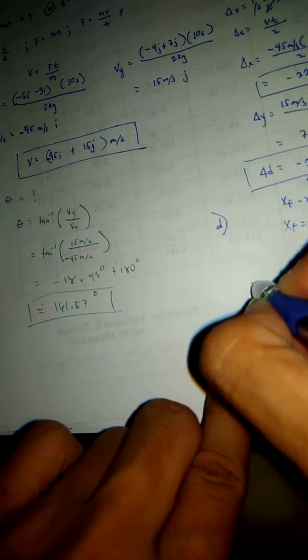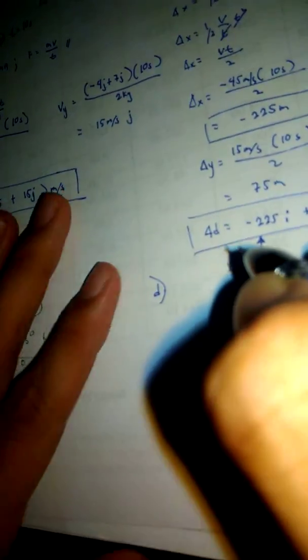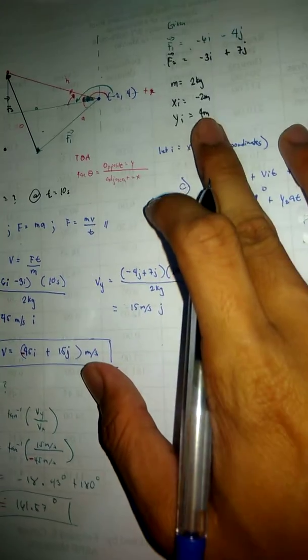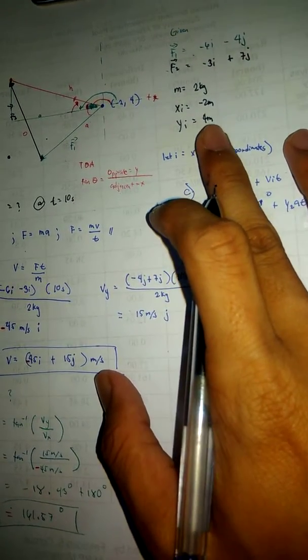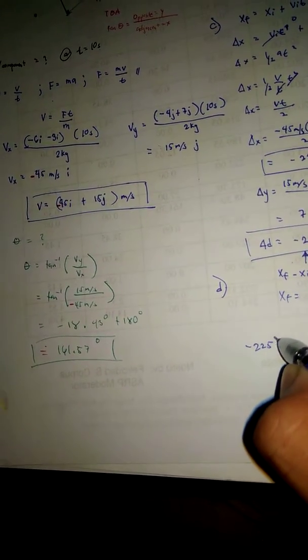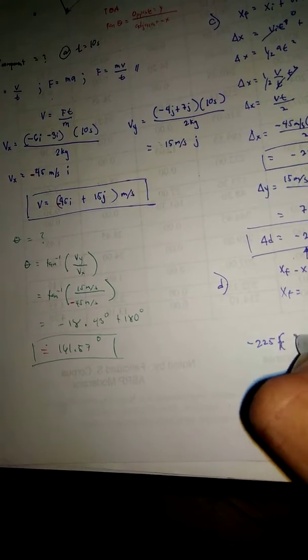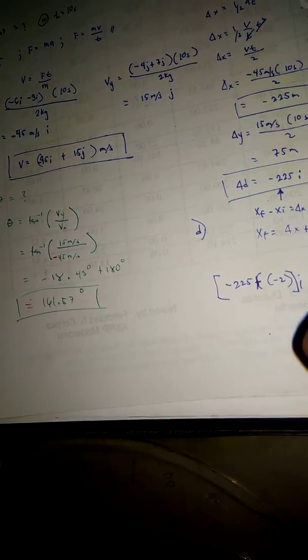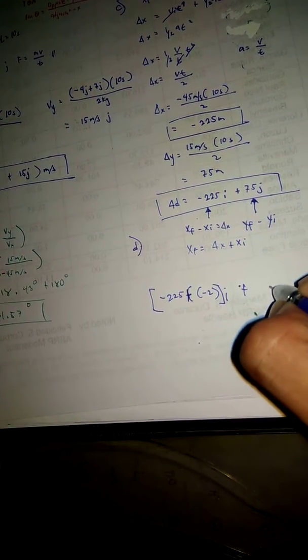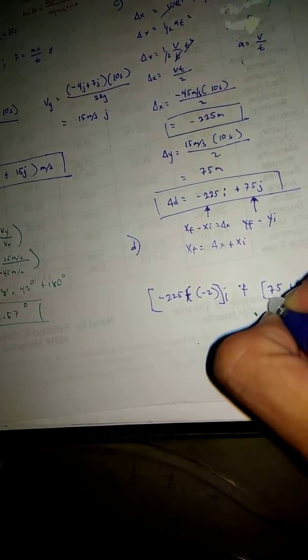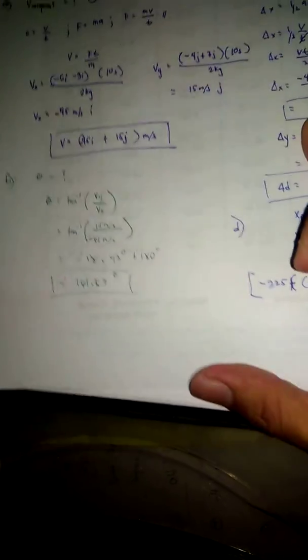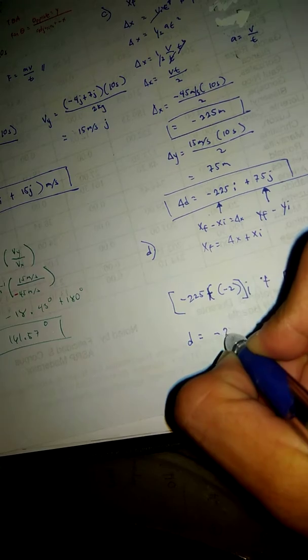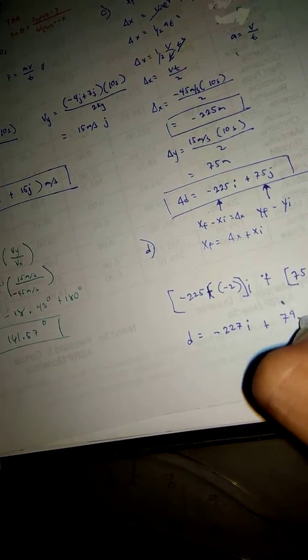The final, negative 225 is our delta X and the initial position at the X axis is negative 2 and the initial position at the Y coordinates is 4. So here, negative 225 plus negative 2. This is i plus 75 plus 4, so this is j. The answer would be D equals negative 227 i plus 79 j.